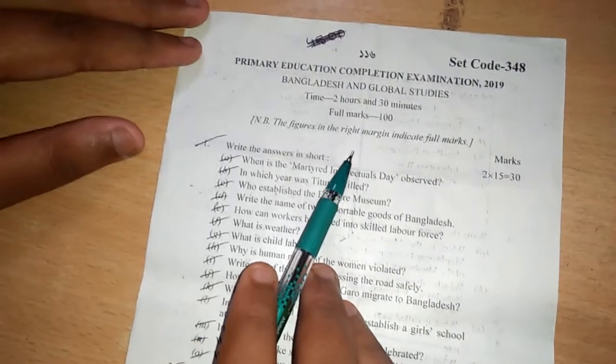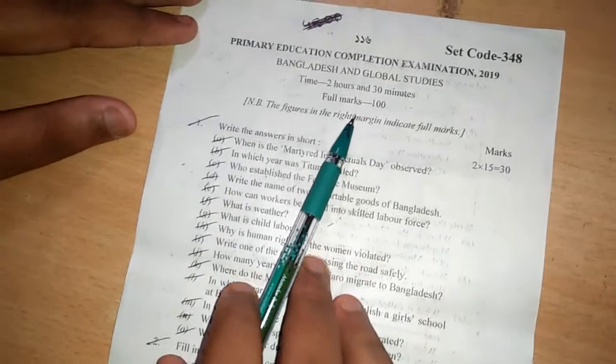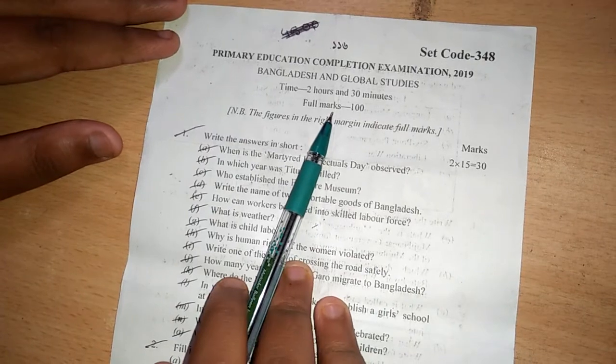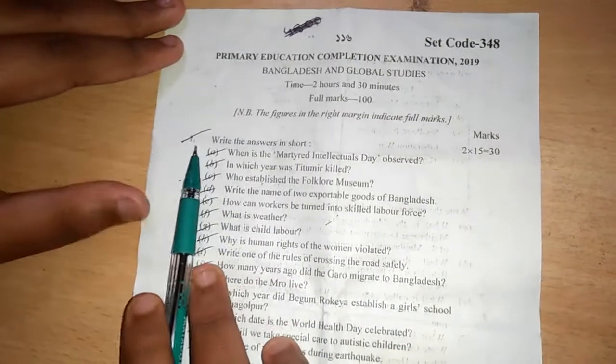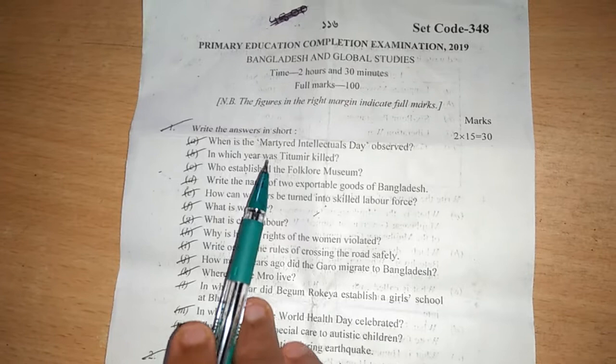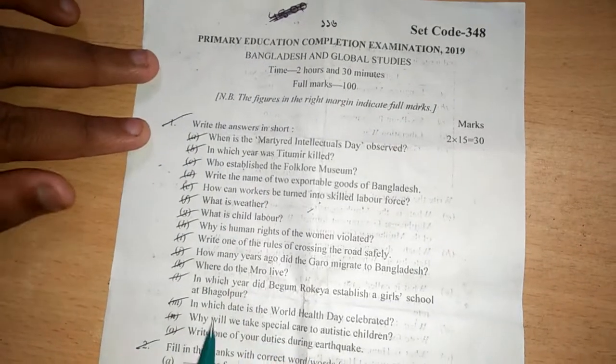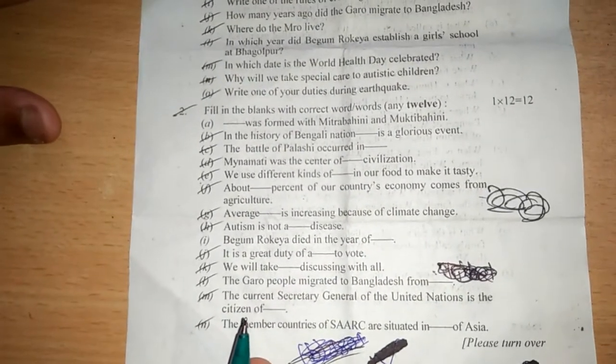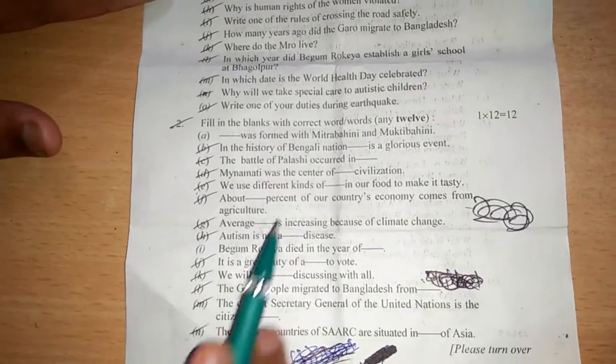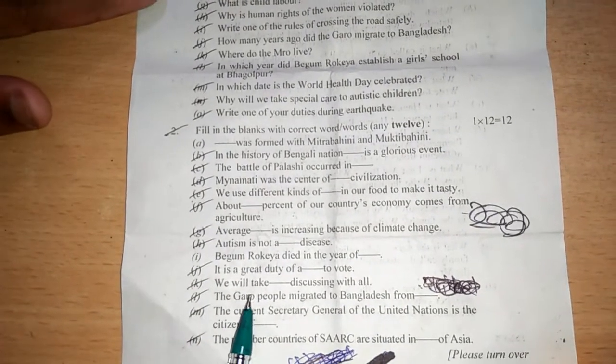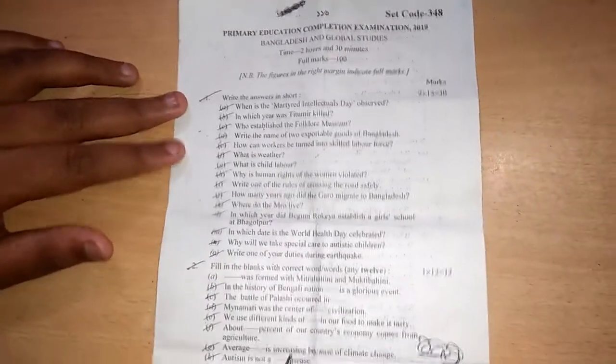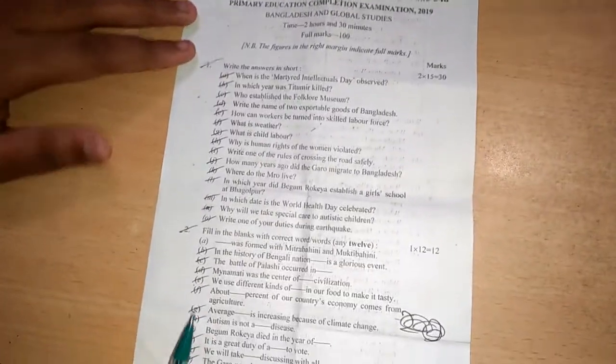Now I will show you the BG. There are 15 short questions. We have to give the 15 short questions. Now in number two, there are 14 fill in the blanks.